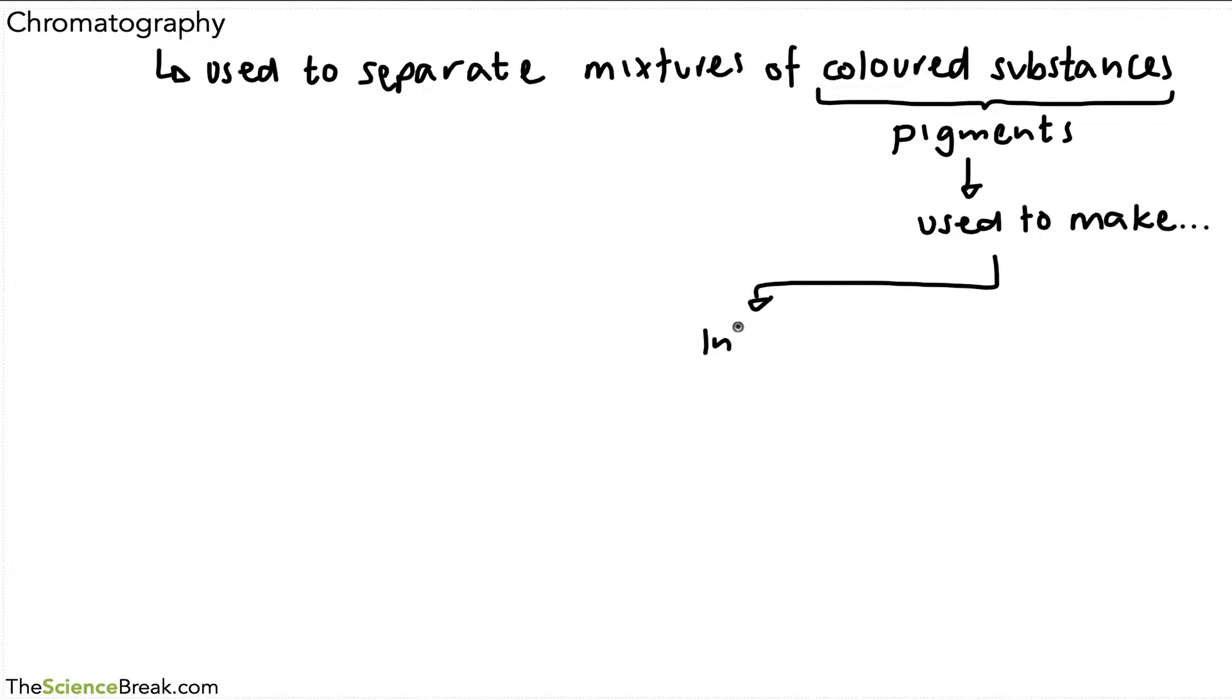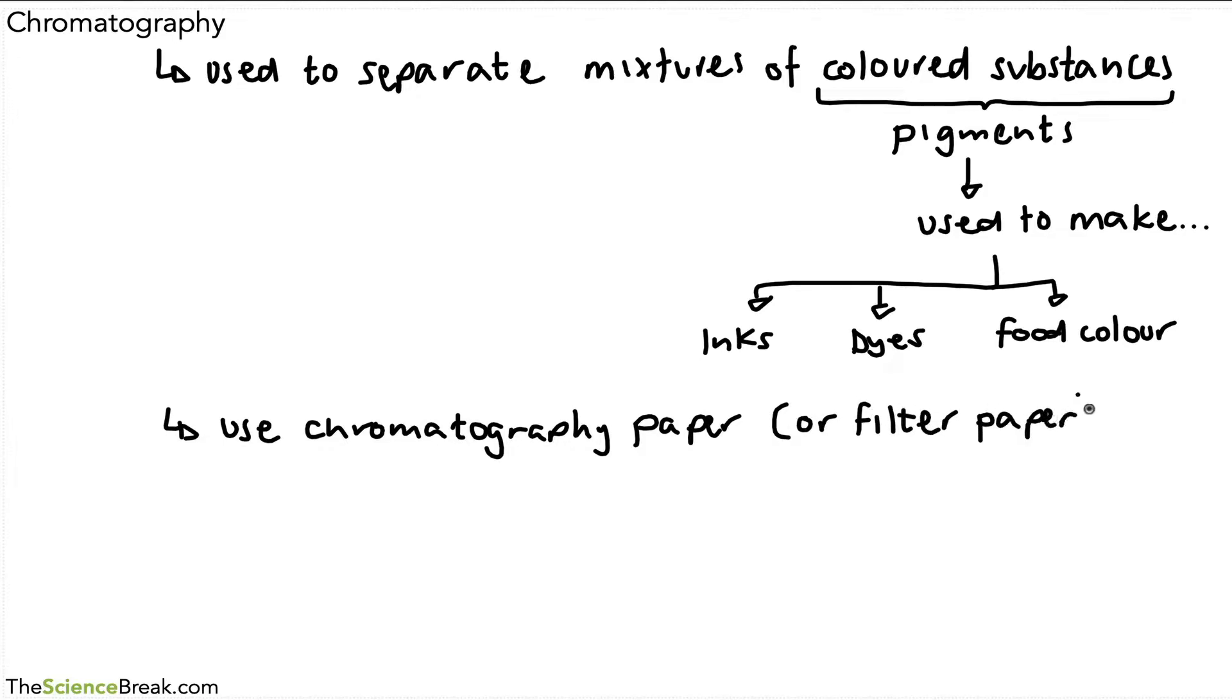Pigments are colored substances or colored chemicals, and they're used in a variety of things. They're used to make inks for pens, dyes, and also food coloring. Pigments are usually mixed together to make colors, and we can separate them out using a method called chromatography. We could do that using chromatography paper, or in school we could just use filter paper, which does the same thing. This helps us to separate out the pigments that might be found in inks, dyes, or food colors.